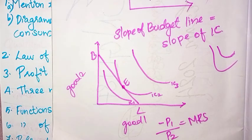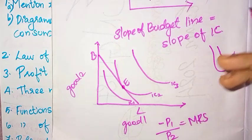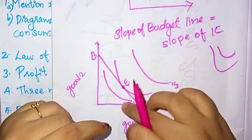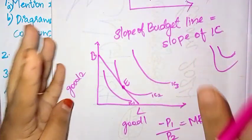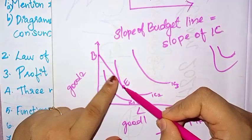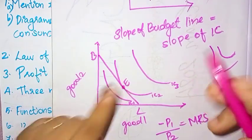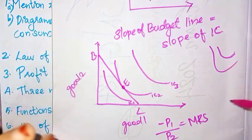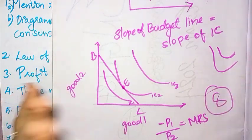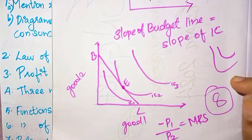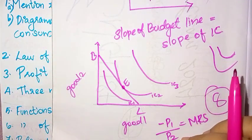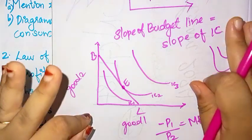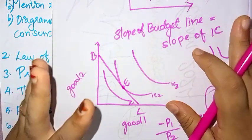MRS — okay. B and L are the budget line, and IC1, IC2, and IC3 are the three indifference curves. This point is the tangent point and the equilibrium point. At this point you can see the consumer reaches optimal choice.